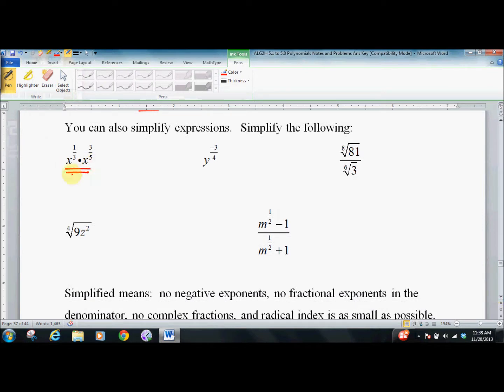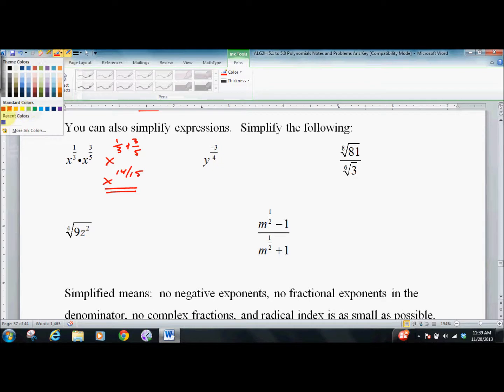You can also simplify expressions. Simplify the following. Well, we have the same base, so we can add exponents. Get this: x to the one-third plus three-fifths, which is x to the 14-fifths.